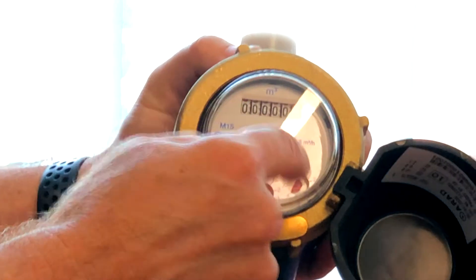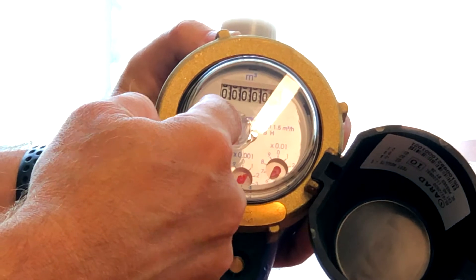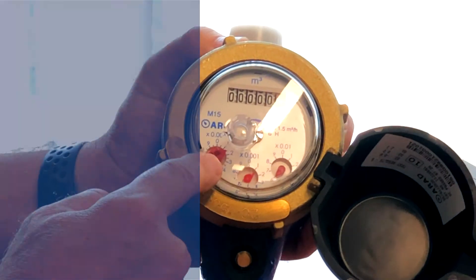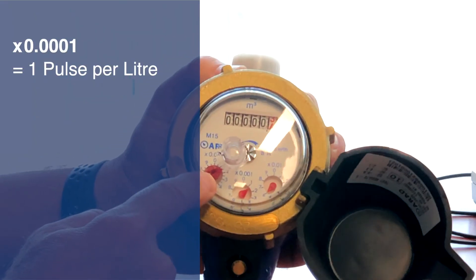300 and so on. And when it's completed one revolution, it means that the water meter has output one pulse, so which means one pulse per liter.